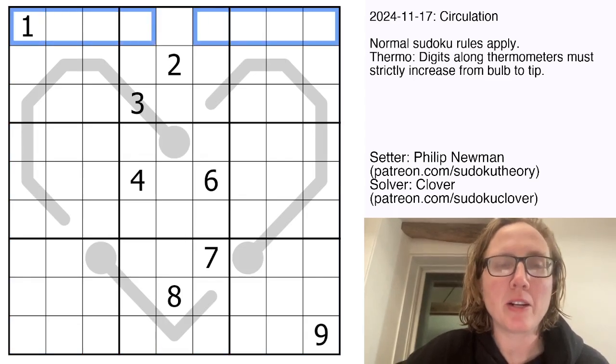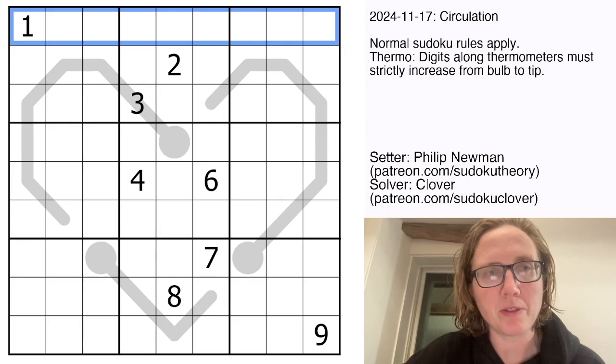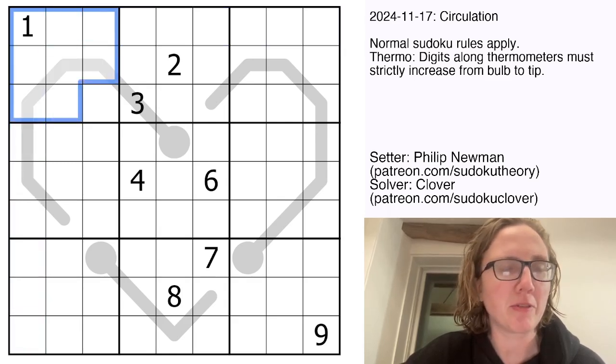So normal sudoku rules apply, meaning we are going to place the digits one through nine once each in each row, each column, and each outlined three by three region.